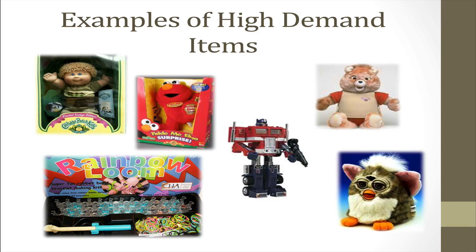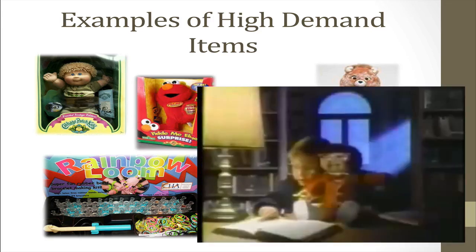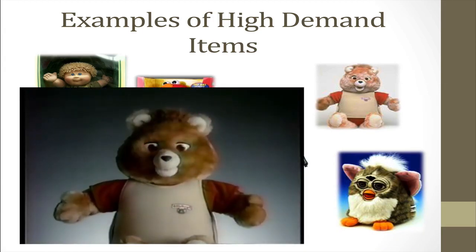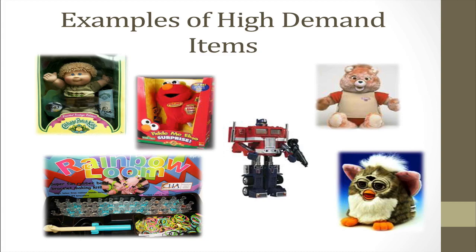Here are some examples of high demand items. In the upper left, Cabbage Patch Kids — in the 1980s people were almost running each other over to get these dolls around Christmas time. There was also the Tickle Me Elmo, Teddy Ruxpin, the Furbies, the Transformers, and most recently the Rainbow Loom — a plastic frame where you'd wrap little plastic bands to make bracelets and necklaces. Nobody had ever heard of it, and then all of a sudden it came out and seemed like the greatest thing since sliced bread. The company created demand and consumers responded. Everybody wanted it, demand was high, and every kid was nagging their parents to get one.